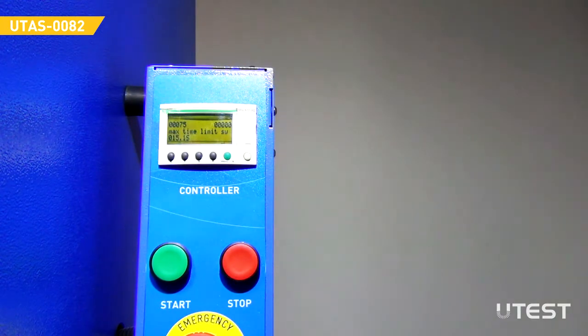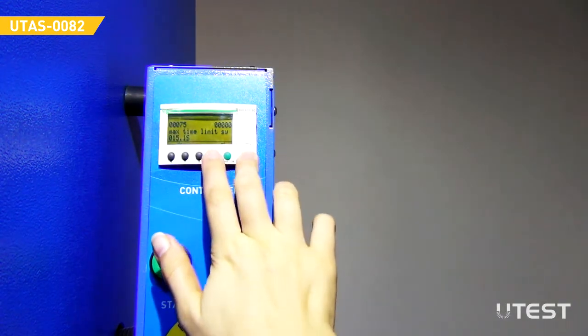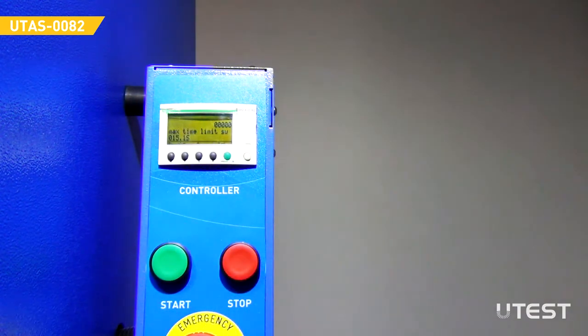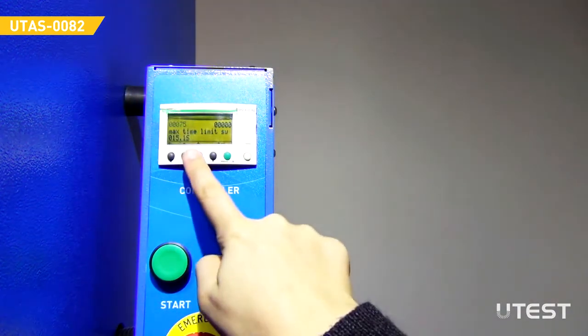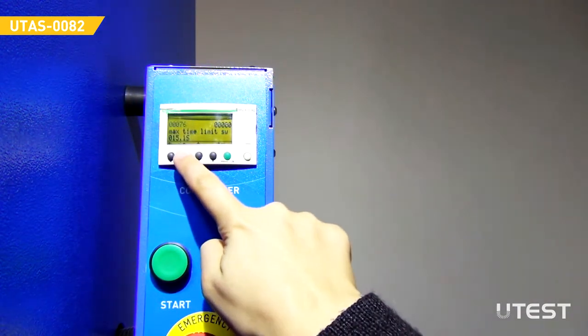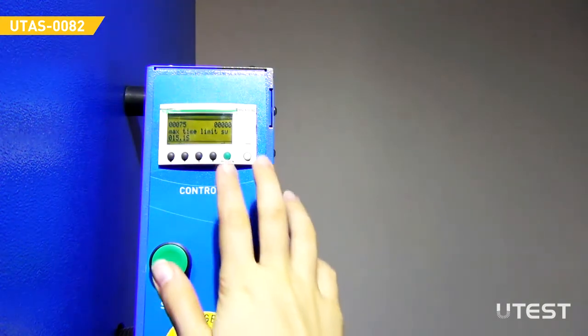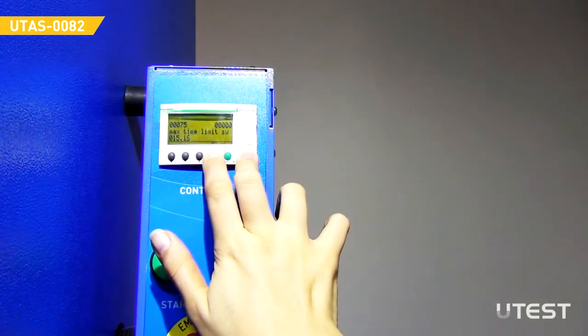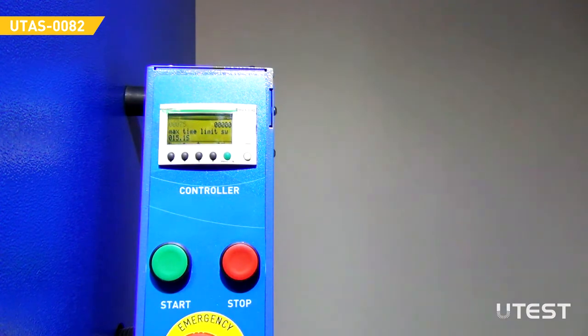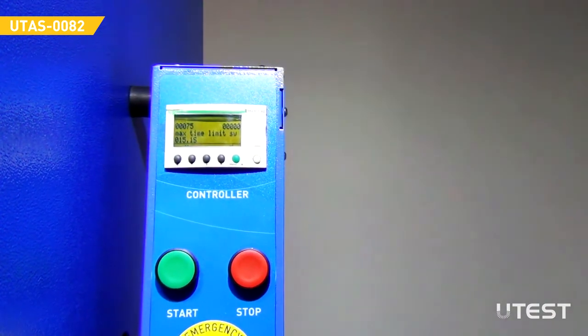The counter is set to 75 blows as ex-factory. Press white and white arrow keys at the same time to reset the number of blows. Then press up and down arrow keys to change the number. After entering the intended number, press white and white arrow keys again to set the number of blows.